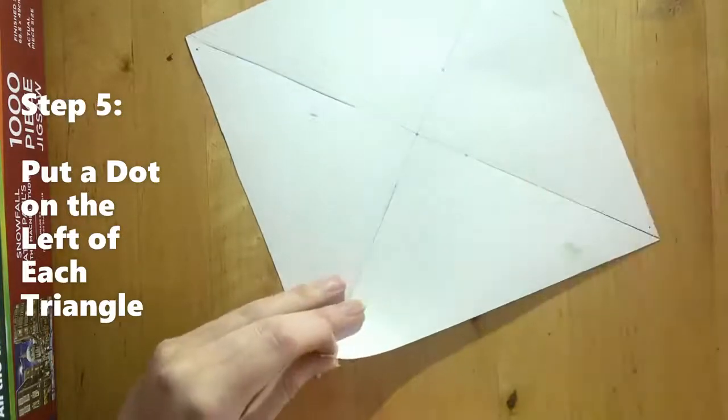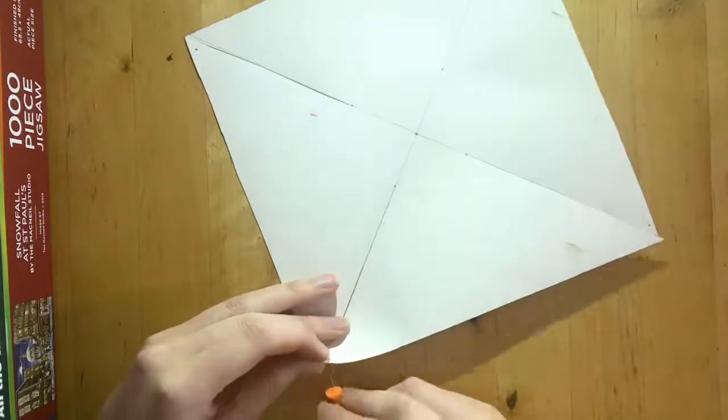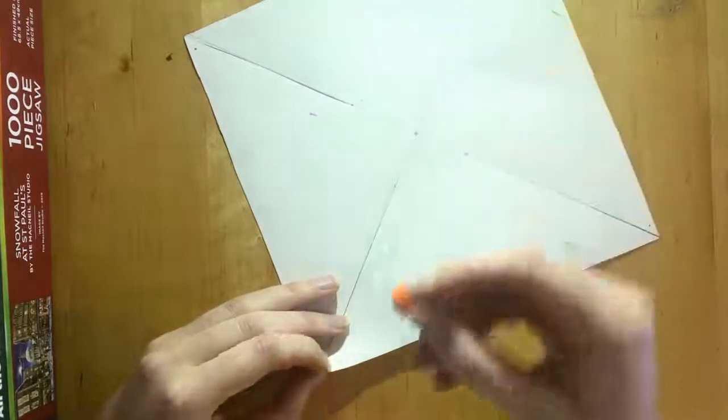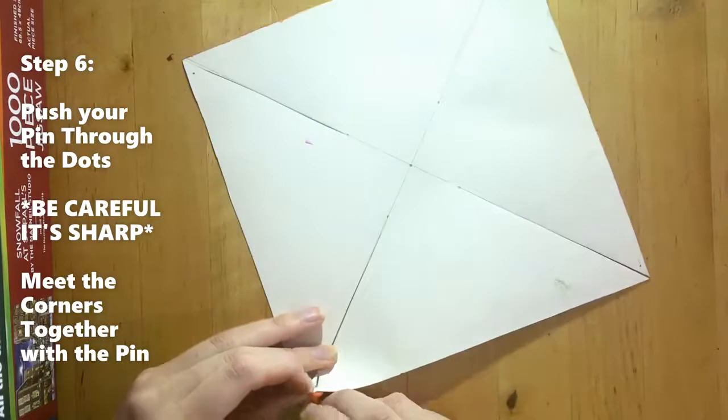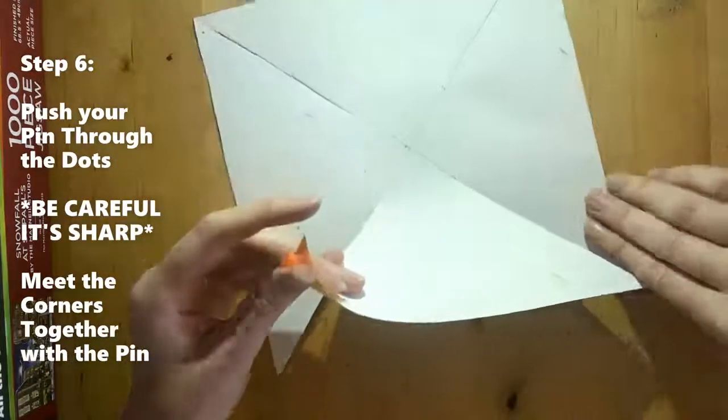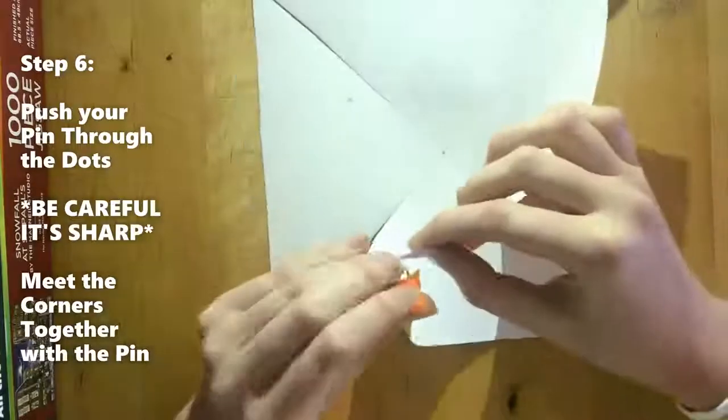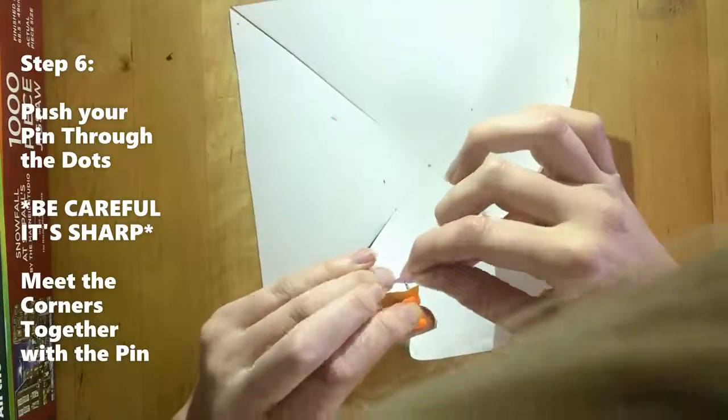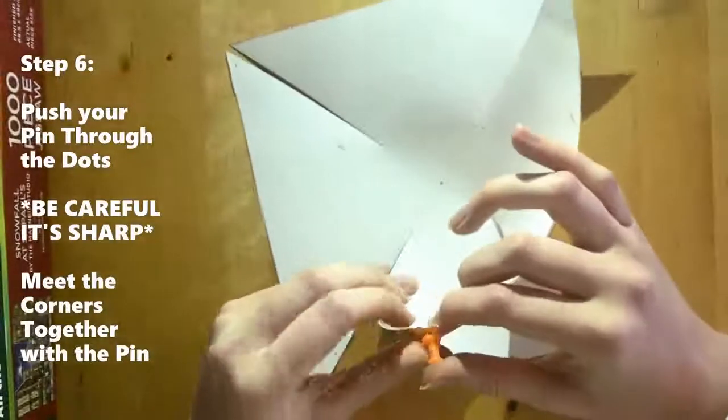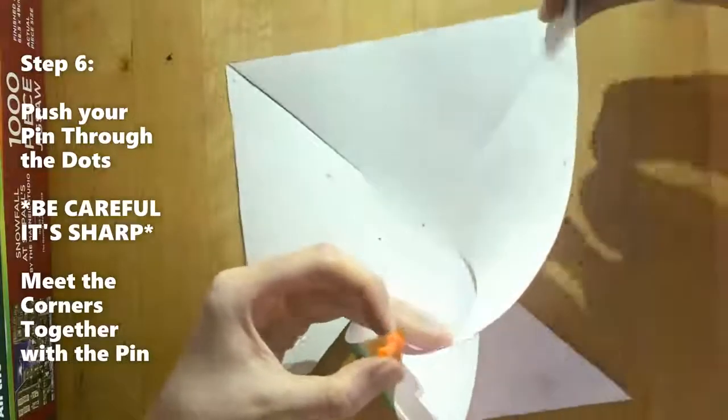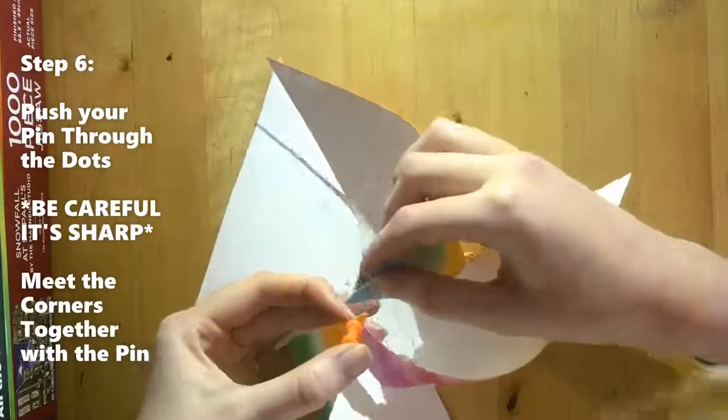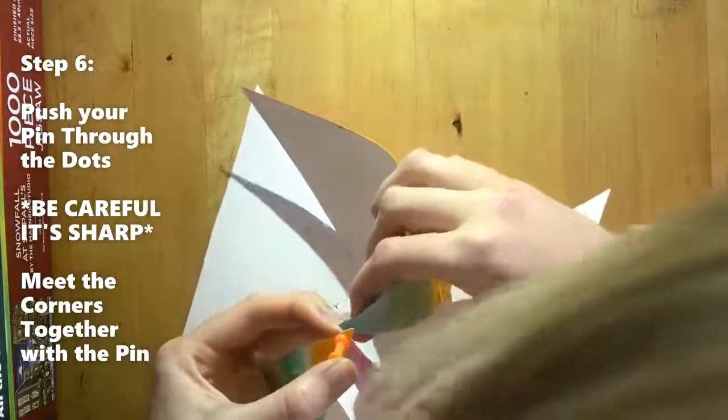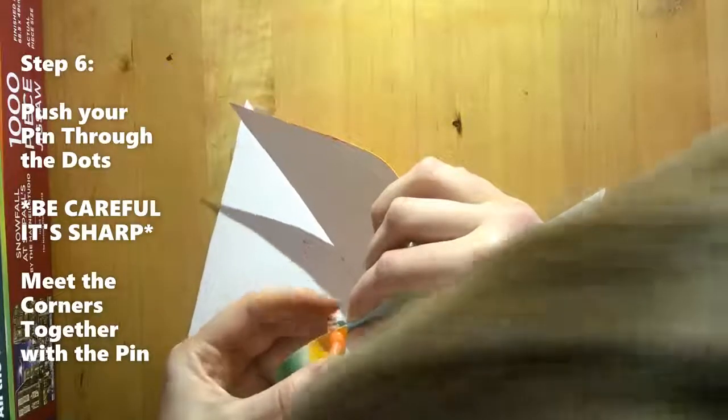What we're going to do. So I'm going to use a pin. One of my pins. I'm going to push through. And then I'm going to get through to my other dot. Be careful with these pins because they're going to be sharp. So if you need help, ask for some help. So we're meeting all the corners that we just put dots on to the pin. There we go.